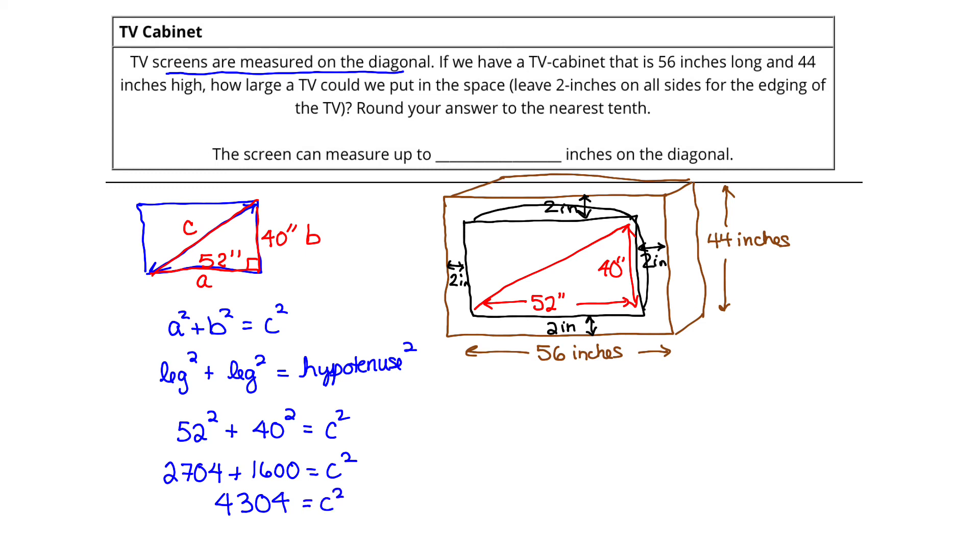Now how do we solve for C? Remember, if C squared equals 4,304, that means C is equal to the square root of 4,304. C therefore is approximately, so again pull out Desmos or your calculator, because 4,304 is a very difficult number to find the square root for. And in fact it's going to be an irrational number. It's not a definite or exact decimal. The square root of 4,304 is approximately 65.60487787. And remember, these irrational numbers go forever and ever and ever.